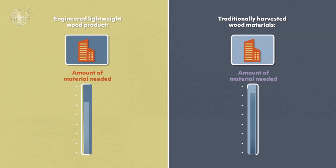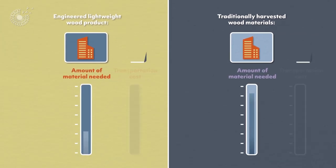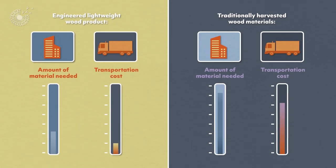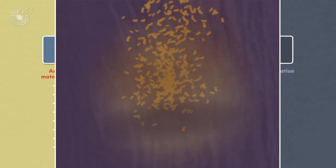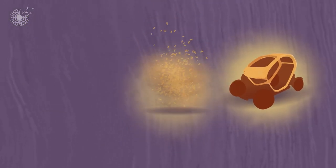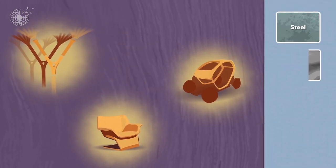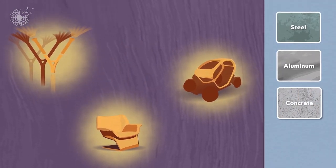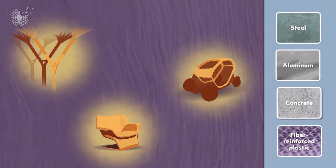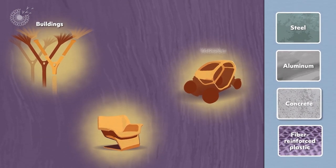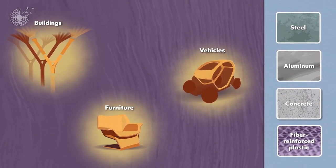Strong by Form's engineered lightweight wood product reduces the amount of material needed to build structures and the cost to transport them. Yet the material is strong enough to become an alternative to highly polluting materials such as steel, aluminum, concrete, or fiber-reinforced plastics in buildings, vehicles, and furniture.